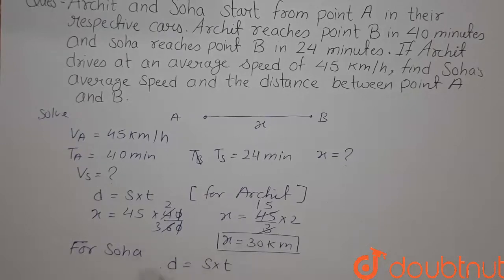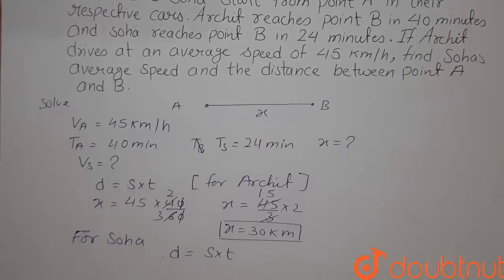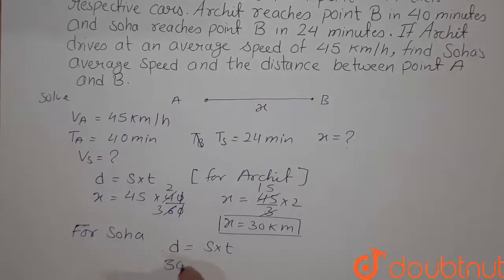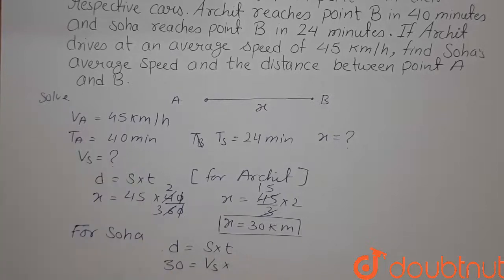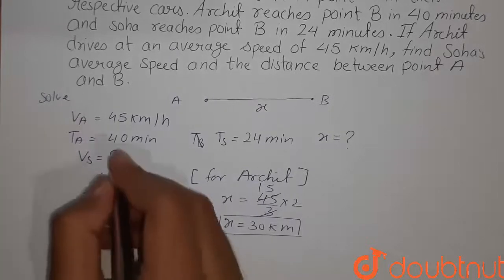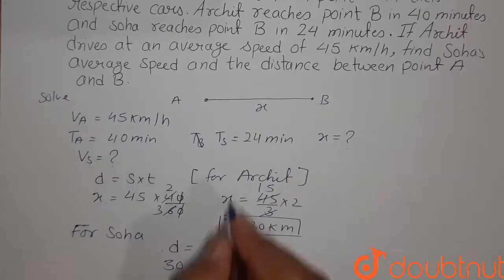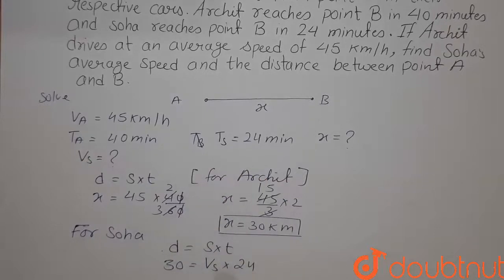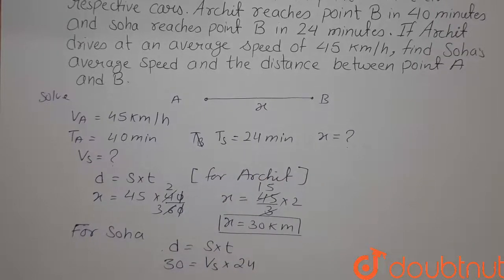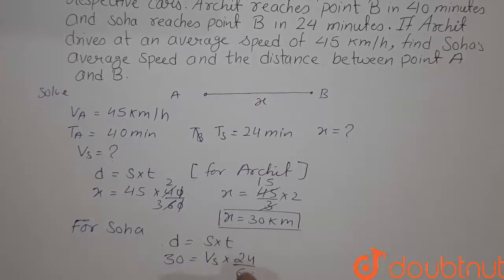Here we put the distance as 30, and speed of Soha is VS, and the time taken by Soha is 24 minutes. So 24, and we have to convert to hours, so we divide by 60. We write 24 by 60.